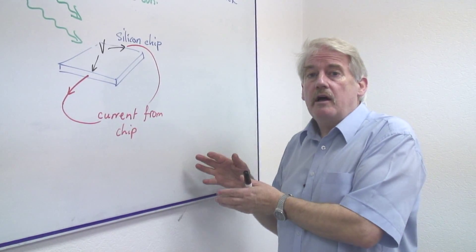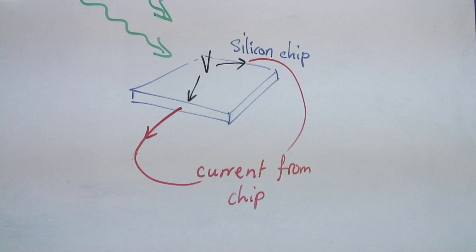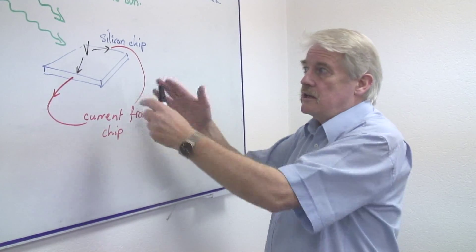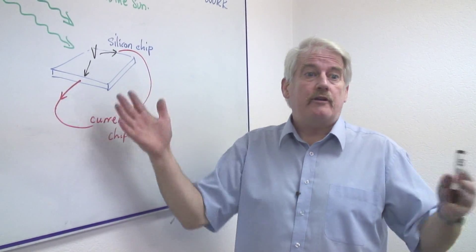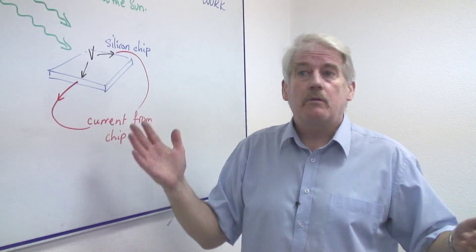Those currents are combined and they can provide enough current to drive a household set of circuitry. Up to about 3000 watts with a standard panel about 1 meter by 1 meter.